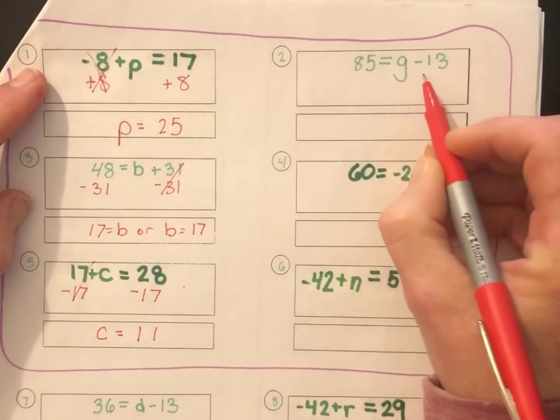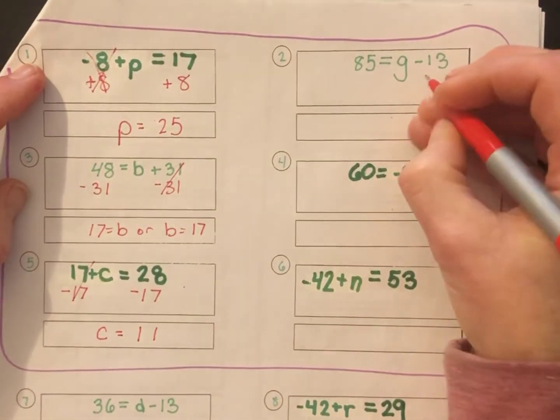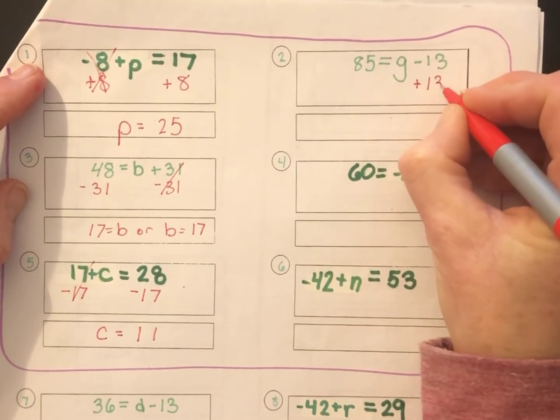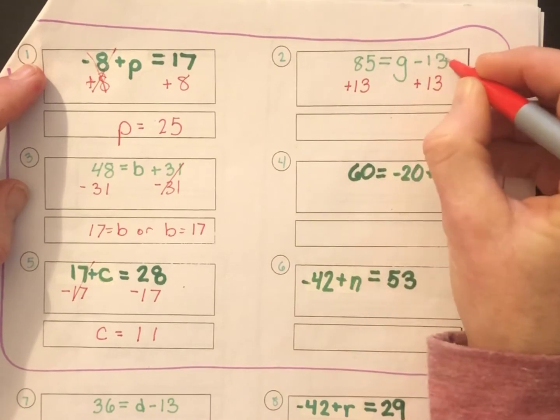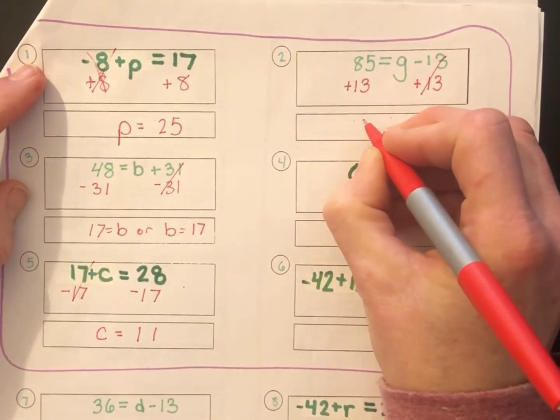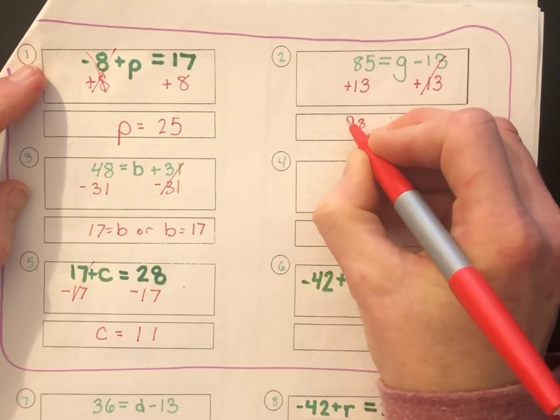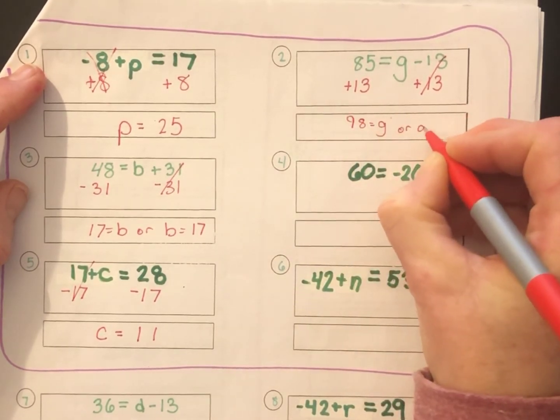Next, on to number 2, the next column. 85 equals g minus 13. Of course, the opposite of negative 13 is positive 13. We'll add 13 to both sides, and we end up with 85 plus 13, 98 equals g, or g equals 98.